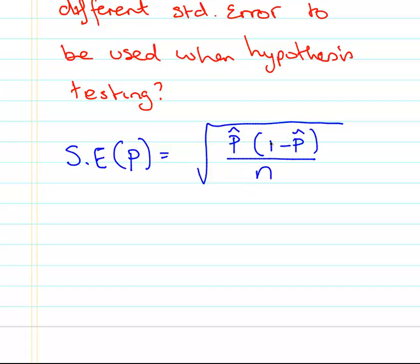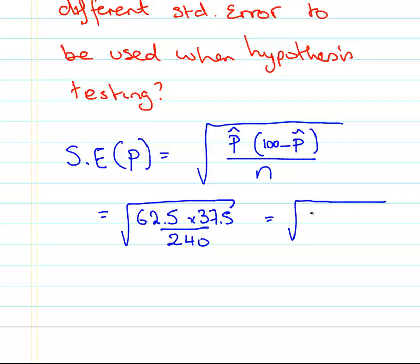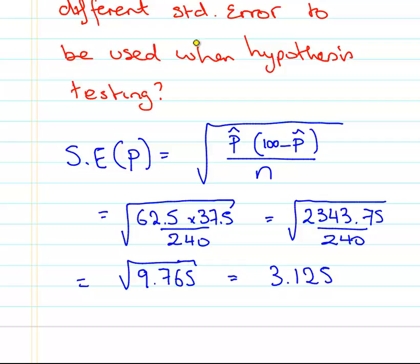The formula would be, the standard error for proportion is the square root of p-hat times 1 minus p-hat all over n. Or if you want to use percentages, you just make that 100. I'm going to use percentages because I think it's slightly easier to do in an exam situation. P-hat was 62.5, 100 minus p-hat is 100 minus 62.5, that is 37.5. We're going to divide that by 240. Working out in the calculator, 2343.75 divided by 240, that equals the square root of 9.765, which I make to be 3.125. So according to my calculations, the standard error is 3.125%.